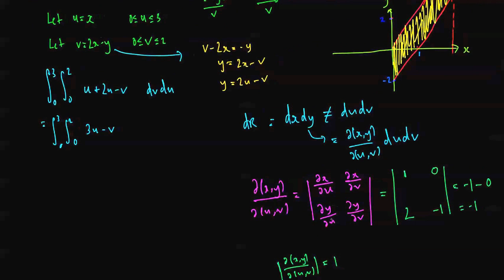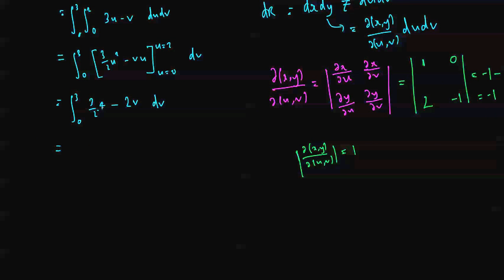So it turns out in this case that dx dy is equal to du dv, because the Jacobian is just 1. So let's integrate that with respect to u first. That becomes 3 on 2 u squared minus vu, and I'm subbing in u equal to 2, u equal to 0, dv. So u is equal to 2, I get 3 on 2 times 4 minus 2v.